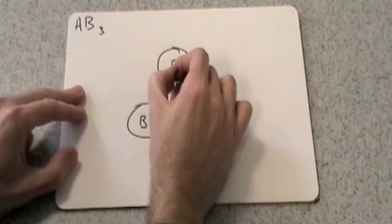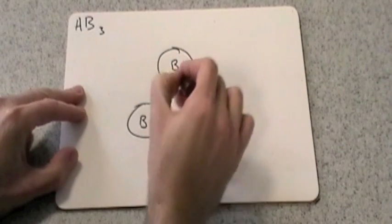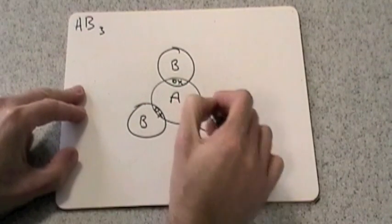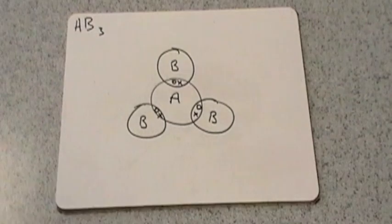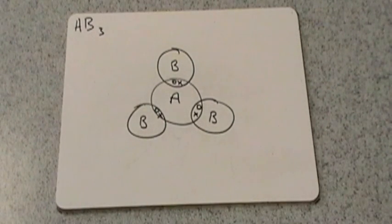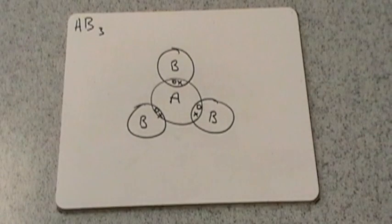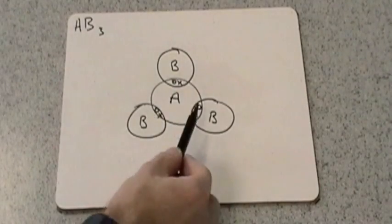So here they are. Let's put the covalent bonds in. Right, so how many pairs of electrons have we got in the valence shell? We've got one, two, three. So we haven't got two anymore, so we can't use the linear shape anymore. There's going to be a different shape.